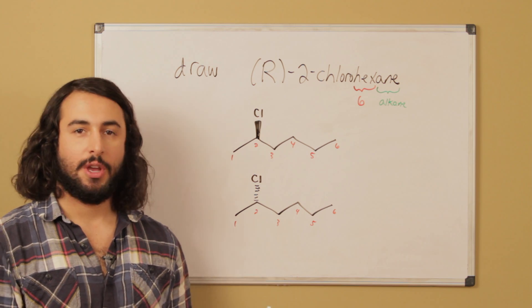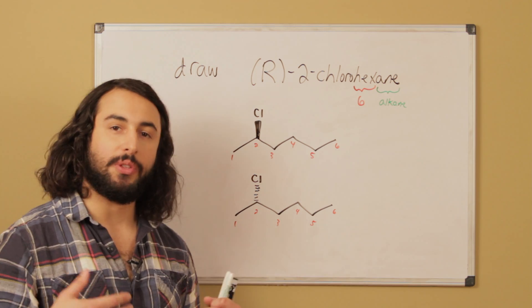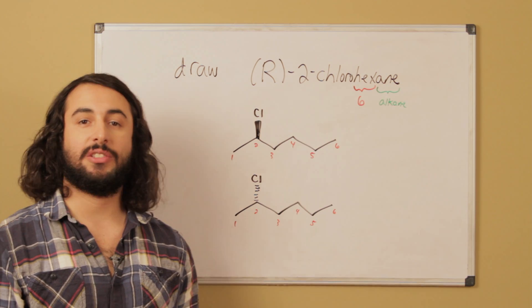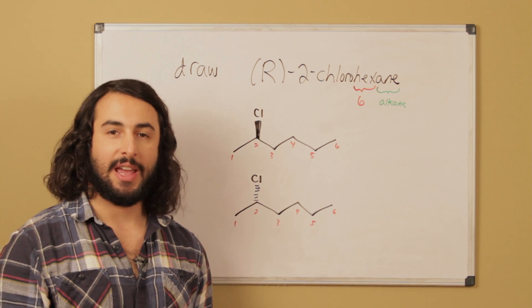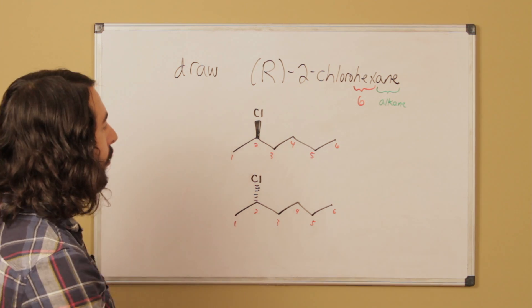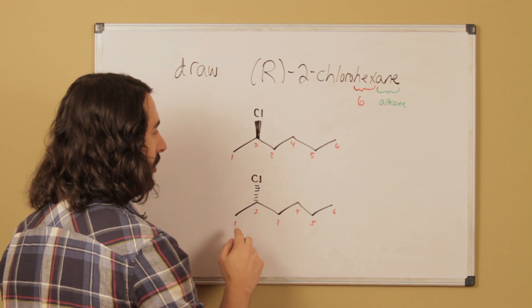When we draw structures from names, what we want to do is first take a look at what the parent molecule is. Clearly we see that this is a hexane. Hex is the prefix that means six carbons, and ane is the suffix that means it is an alkane, which is a fully saturated hydrocarbon. So we know that we're going to have a six carbon parent chain.